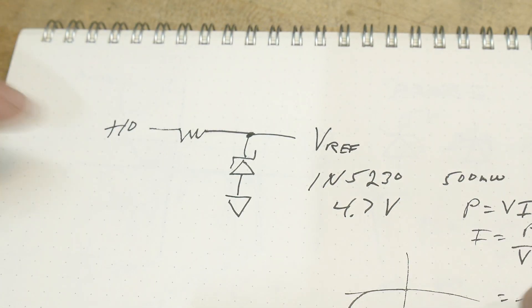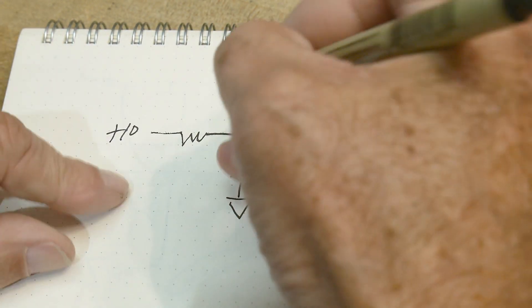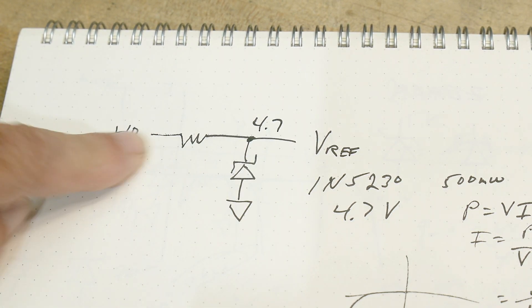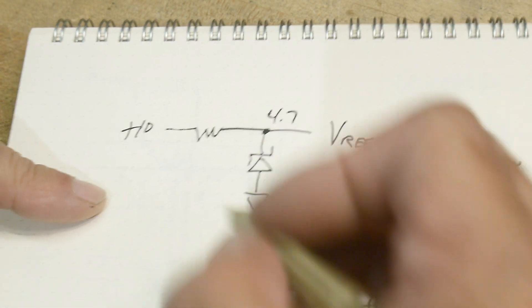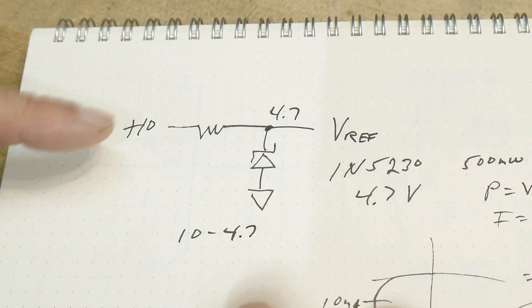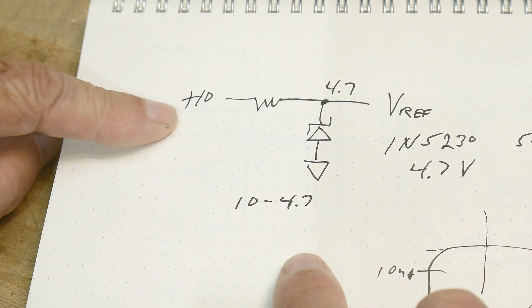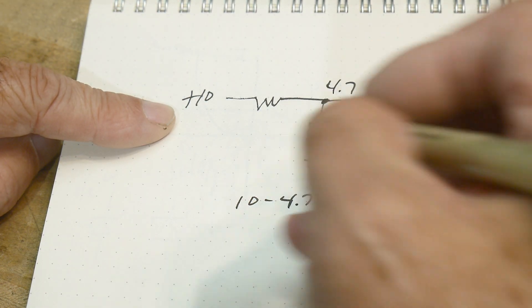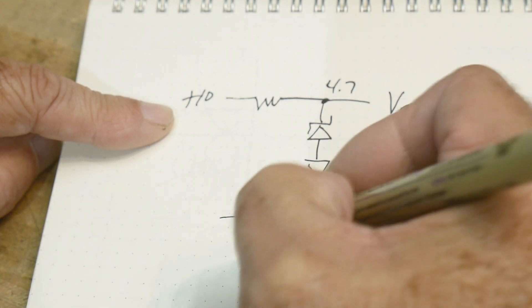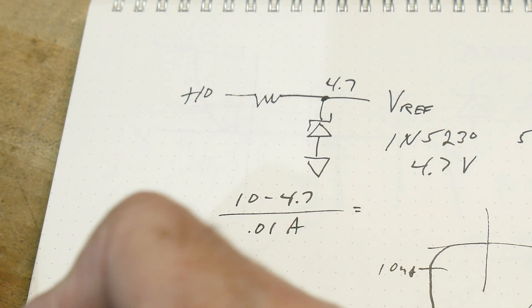All right. So how do we make sure we're getting 10 milliamps into the device, right? Well, we're going to get 4.7 when we're done. So how many volts are across this resistor? 10 minus 4.7. Okay. That's how many volts are across the resistor. And what do we want? Well, we want 10 milliamps. Okay. 0.01 amps. And so that will give us how much the resistor is.